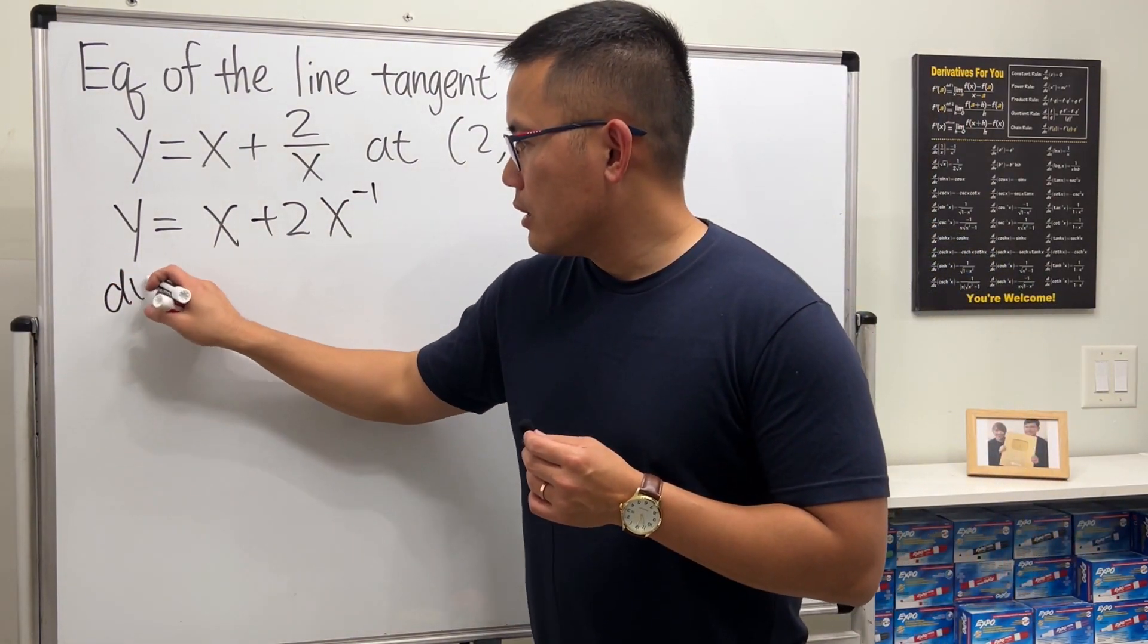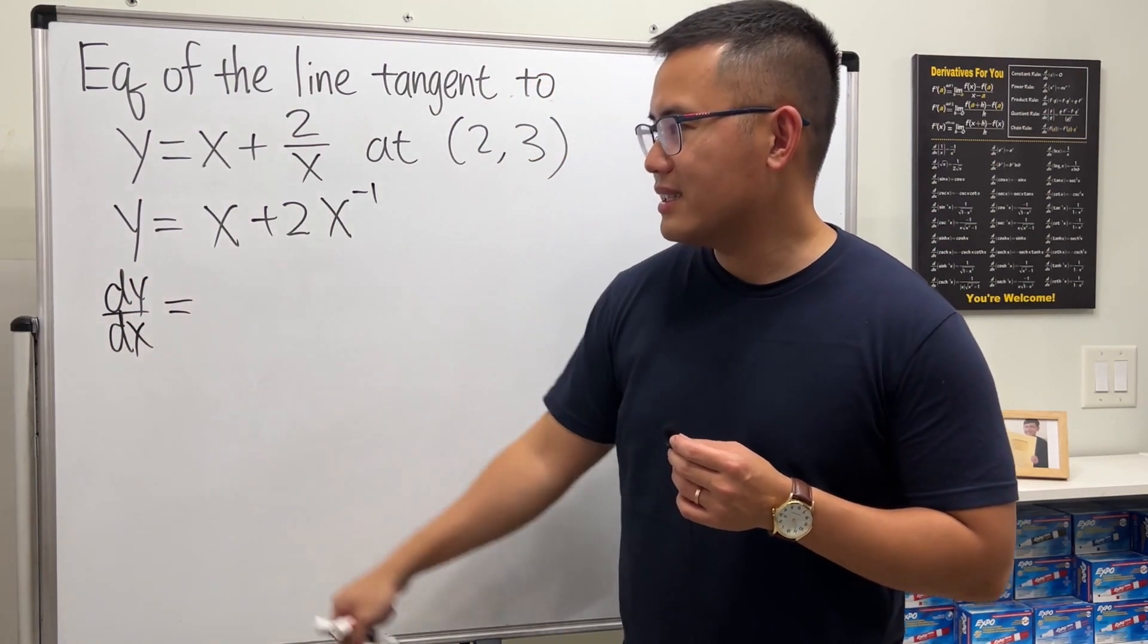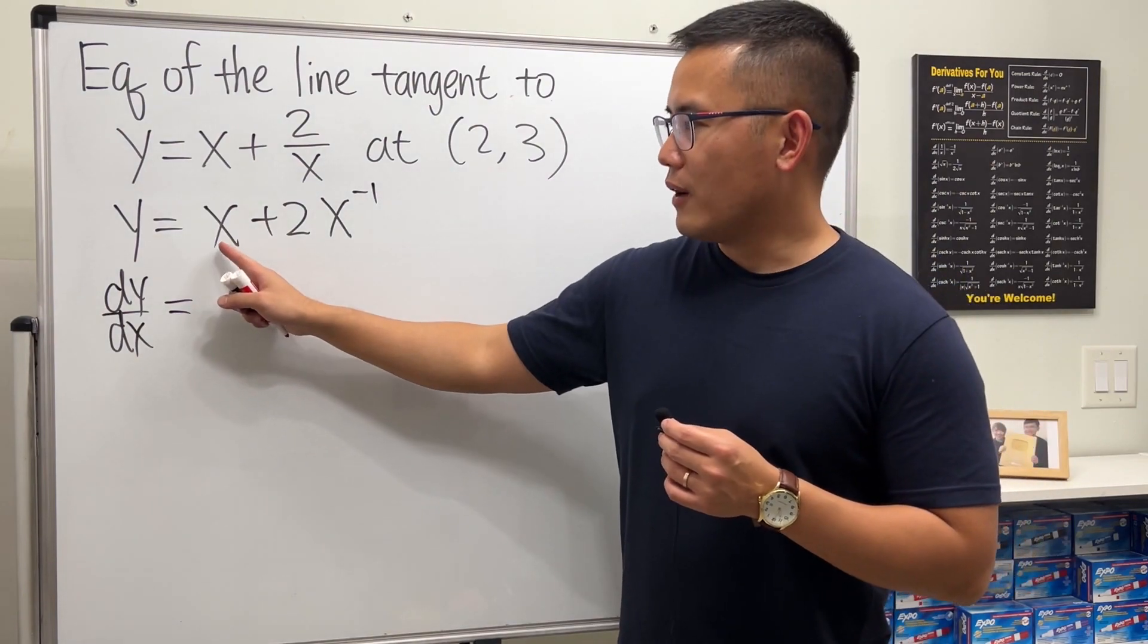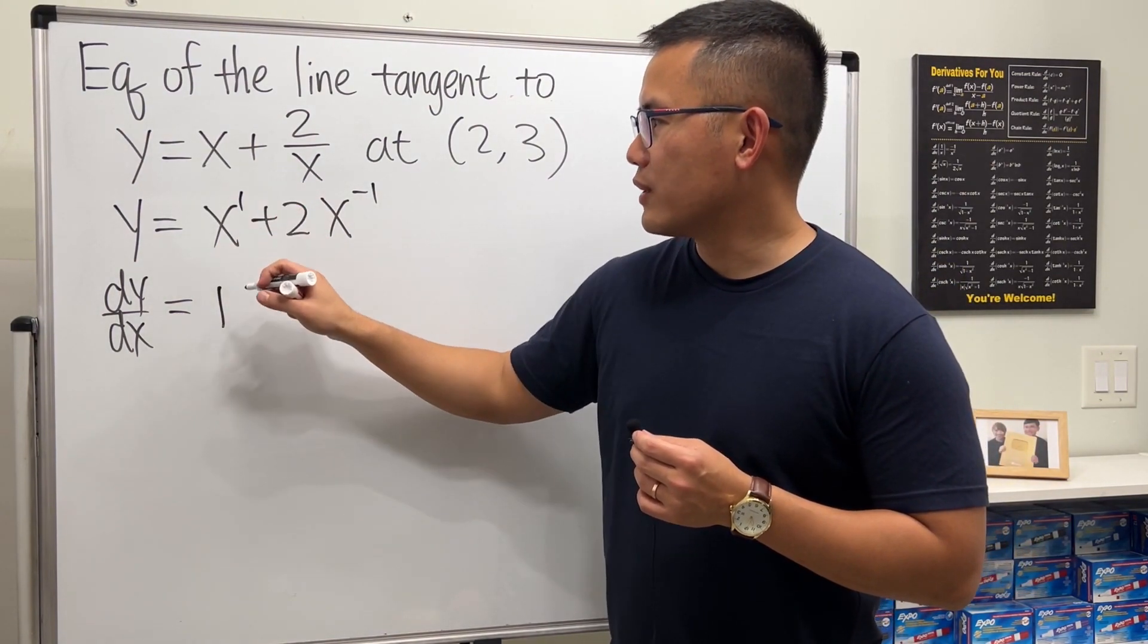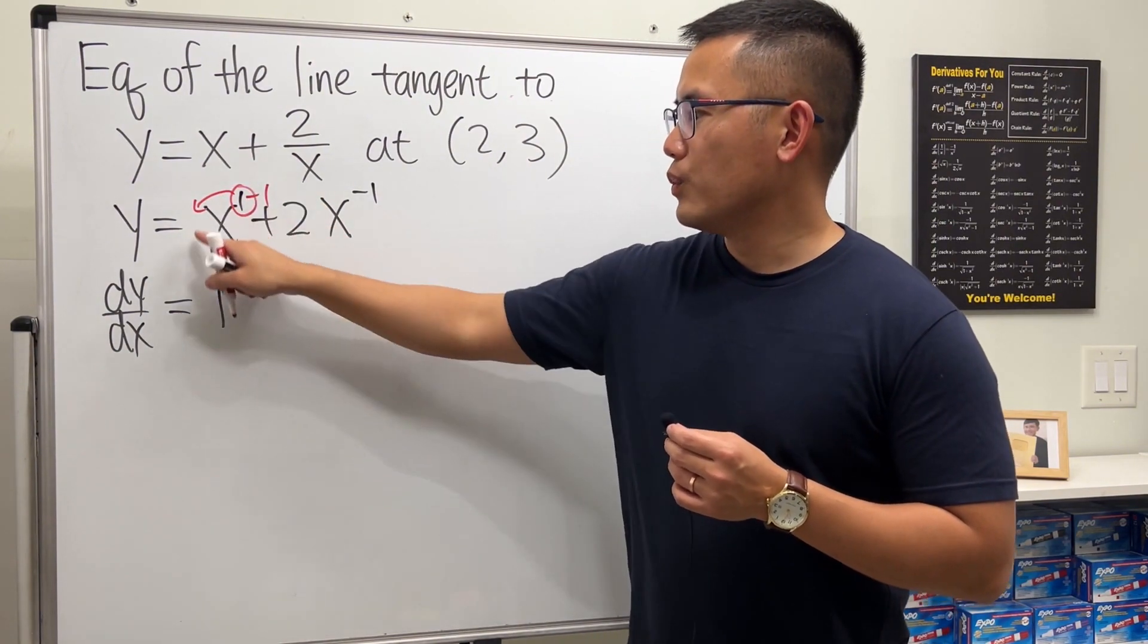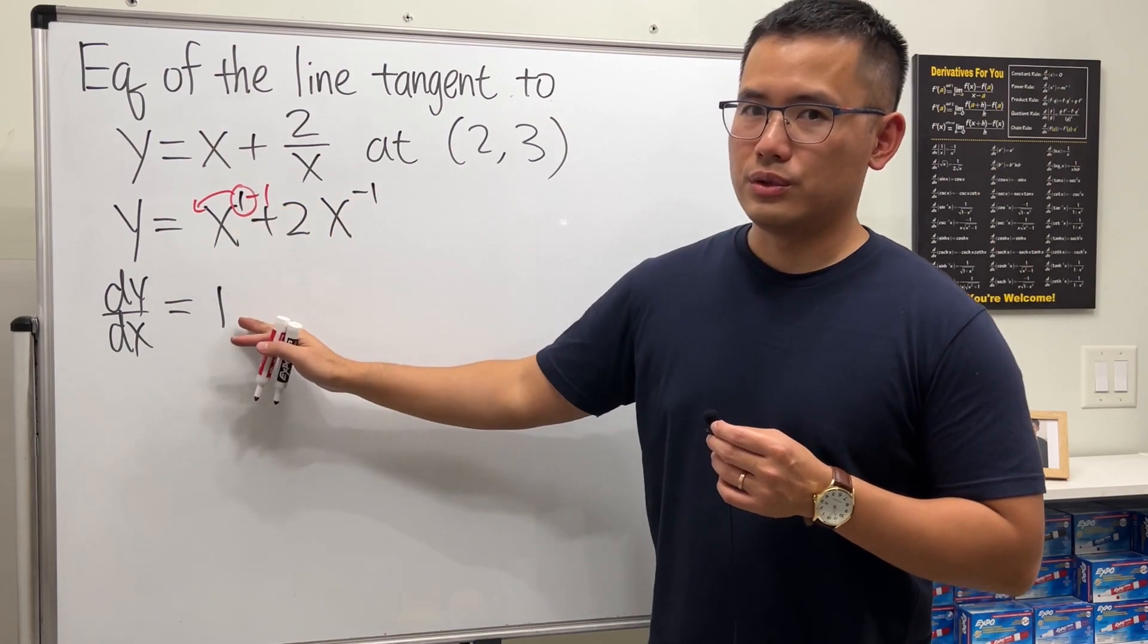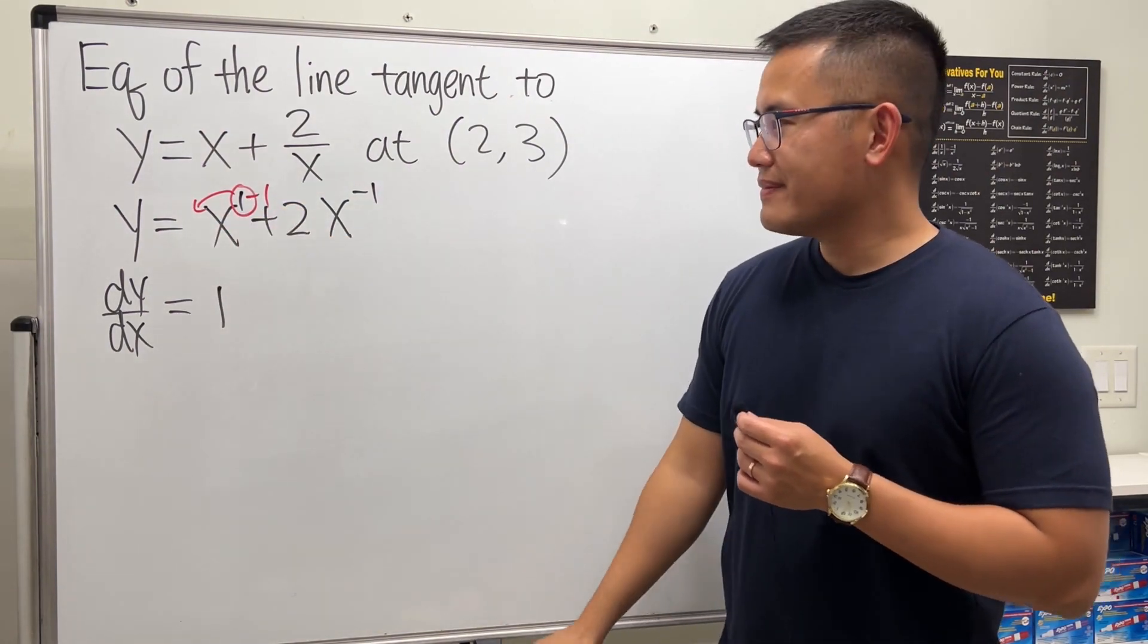From here we can take the derivative. We get dy/dx, and the derivative of x is just 1. You can look at this as x to the first power—bring the 1 to the front and minus 1, so x plus 0 is just 1.